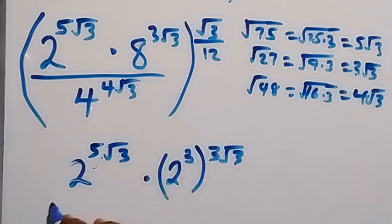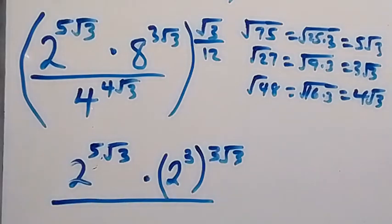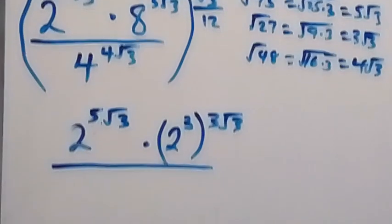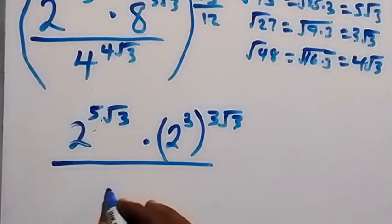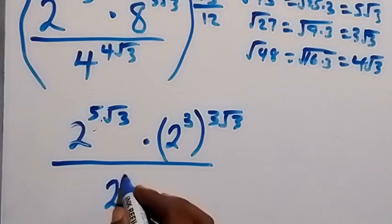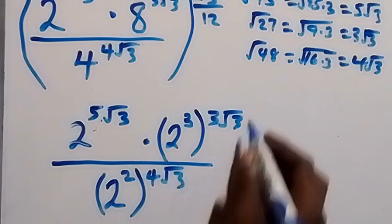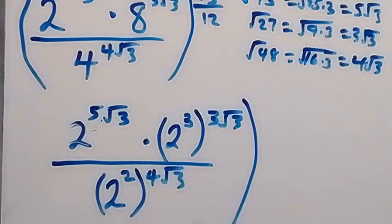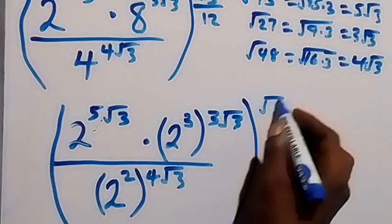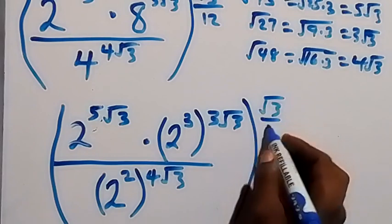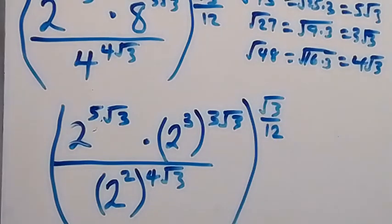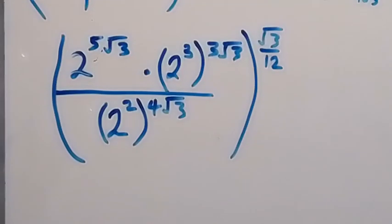4 can be expressed as 2 squared, so we have 2 squared raised to power 4 root 3, divided by this, all raised to power root 3 over 12.